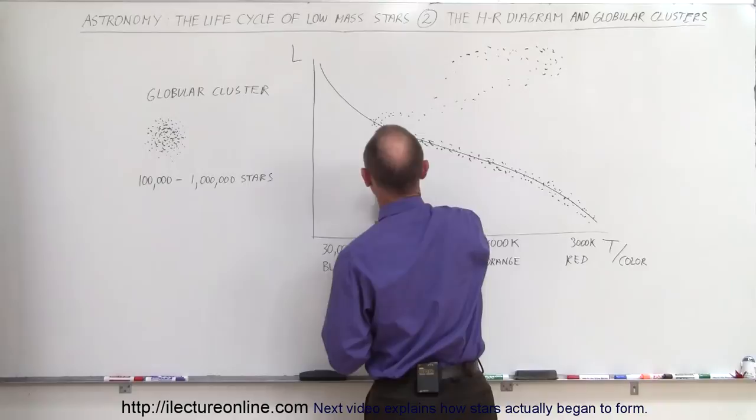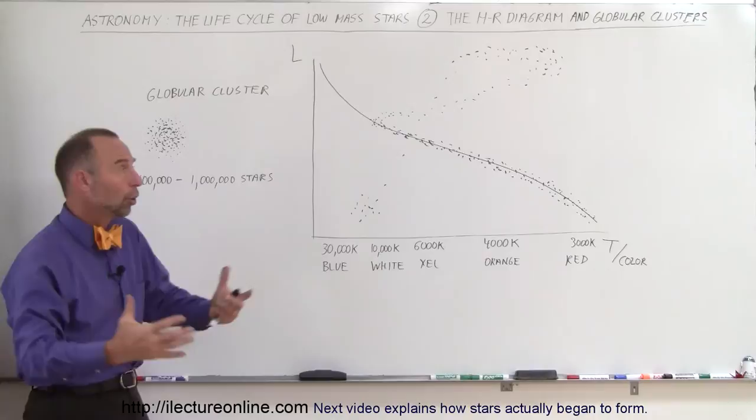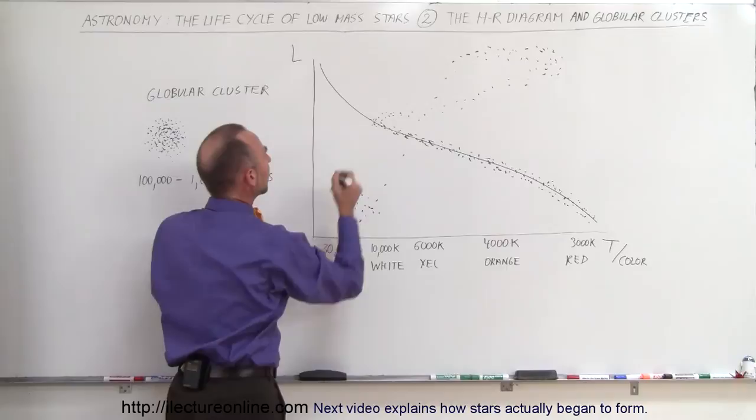That's pretty well what we normally would see on an HR diagram, except on the regular HR diagram when we looked at stars from all over, we'd also see a bunch of stars over here. Notice that they were completely devoid. And this point here is known as the turn-off point.